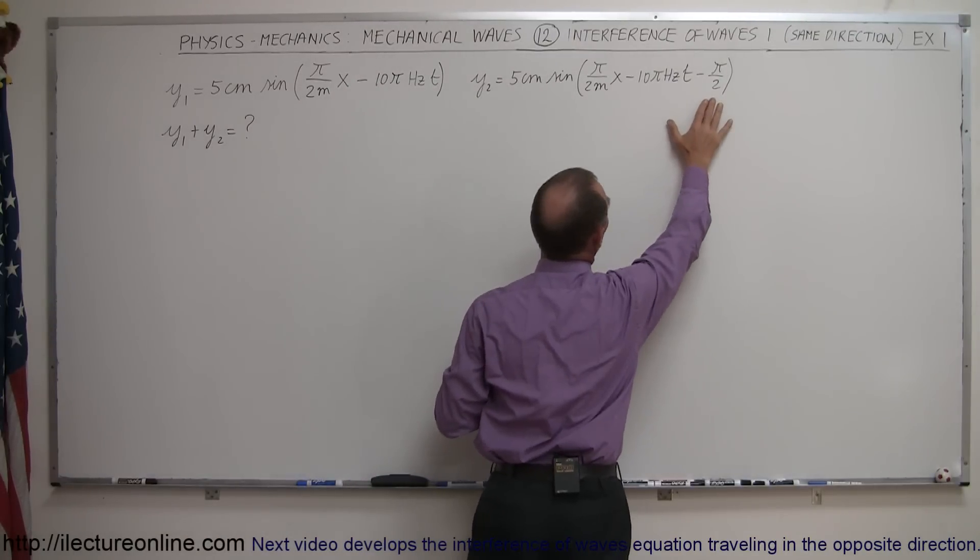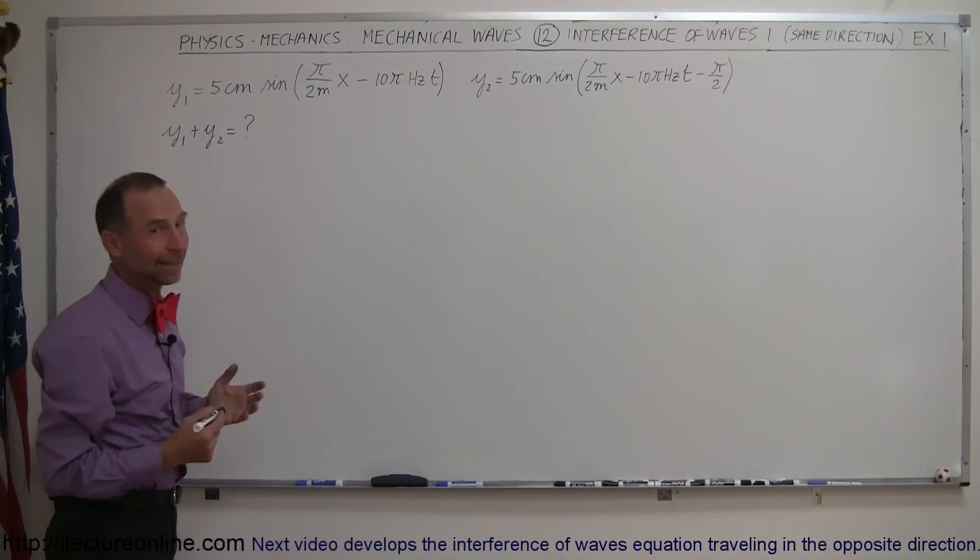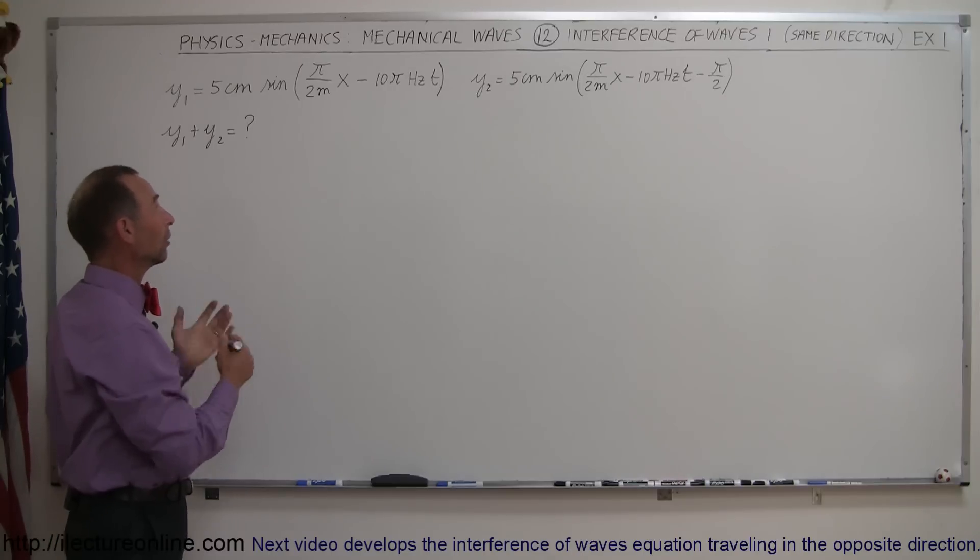Only difference is that one is shifted to the right by half a pi. That would be 90 degrees. So how do we add these together?